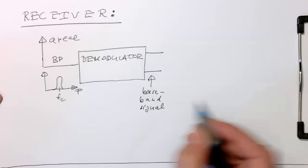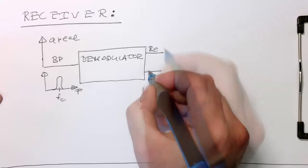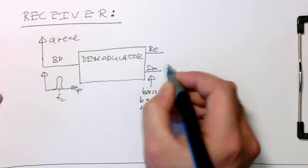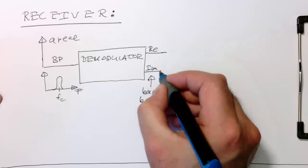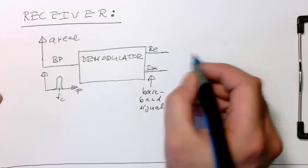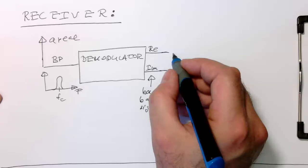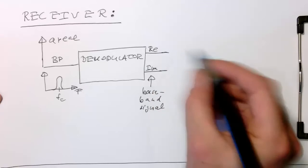So the baseband signal, again, two lines, because it can be real and imaginary, so the quadrature information. So here, at this point, we've got a stream of sort of like analog symbols. So we don't know where they start and where to the end.